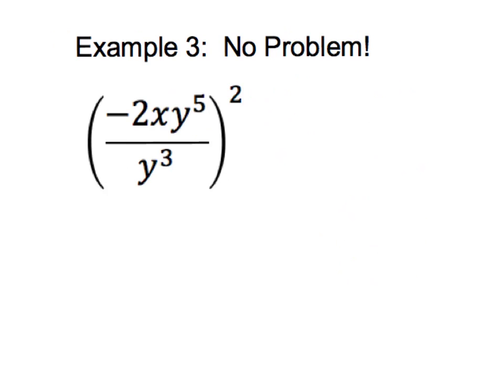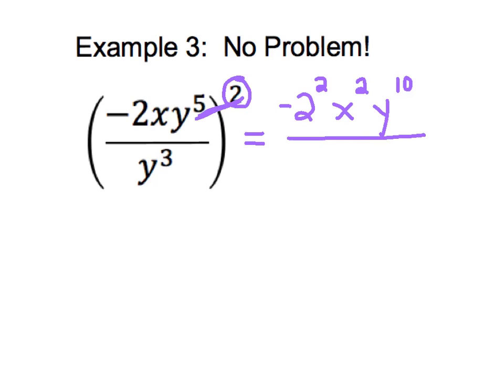Please write down example three. This one's going to be no problem as long as we understand this rule. That two exponent on the outside will apply to everything in our numerator. I'm going to rewrite that to say negative two to the second power times x to the second power times y to the tenth power, applying my power to a power rule there. All that will go over y to the sixth power, applying my power to a power rule here.